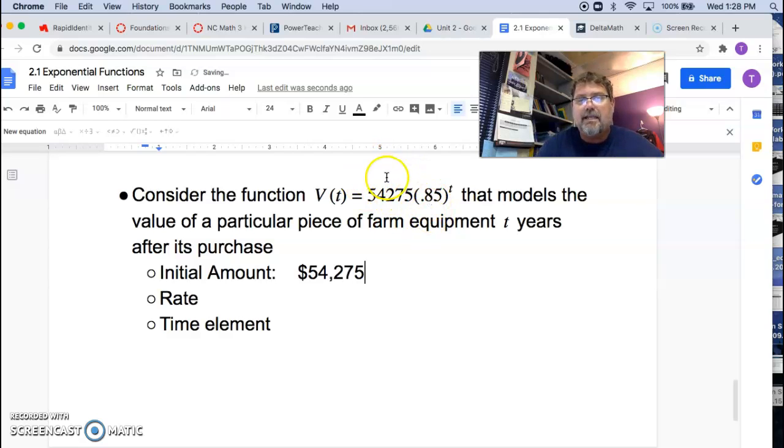The rate. Okay. Is this decay or growth, right? Is this farm equipment going up in value or down? Well, this right here is less than one. So this is absolutely decay. And the question becomes, how much? What amount of decay is this?